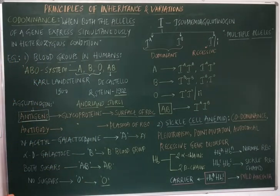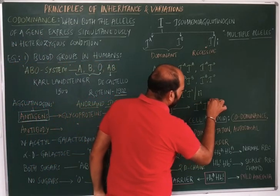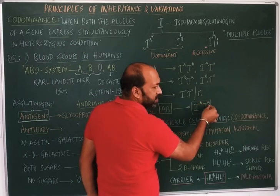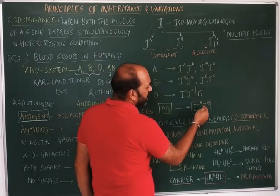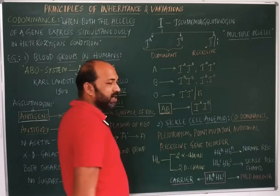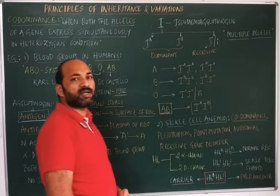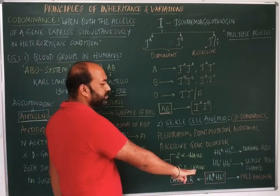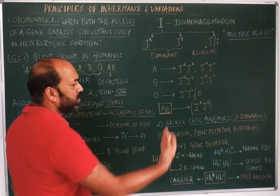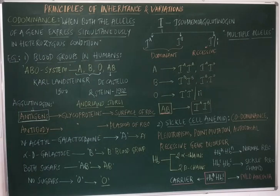So these are two examples explaining co-dominance, where two dominant alleles express together. In blood groups, IA and IB express together giving AB blood group. In sickle cell anemia, HbA and HbS both dominant alleles express together, demonstrating co-dominance. Thank you.